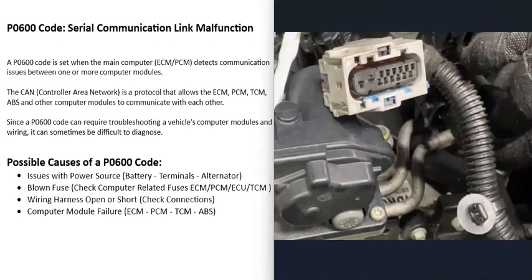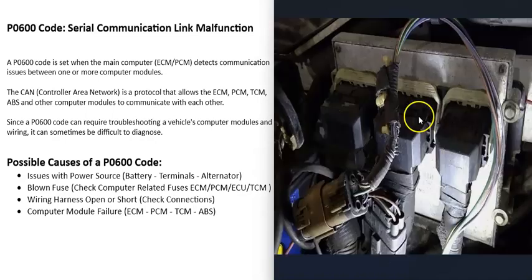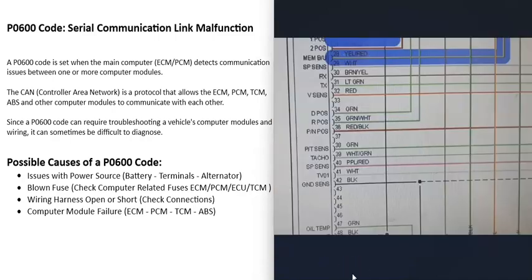A third possible cause is a problem with the wiring between the computer modules — things like an open circuit, a short, or a bad connection. This is where troubleshooting can get tricky. Visually inspect the wiring for anything physically wrong; rodents sometimes chew on wires. Check all connections to make sure they're properly seated. If everything looks fine, you can get wiring schematics for your vehicle and test the wiring more thoroughly.